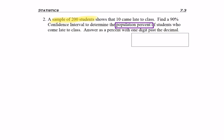As I read the question, the first thing I saw was a sample of 200 students. So I know that n equals 200. Next, I saw that 10 came late to class. So this is x. x equals 10, not p hat equals 10. Because remember, p hat is a percent of our population, or in this case, a sample percent.